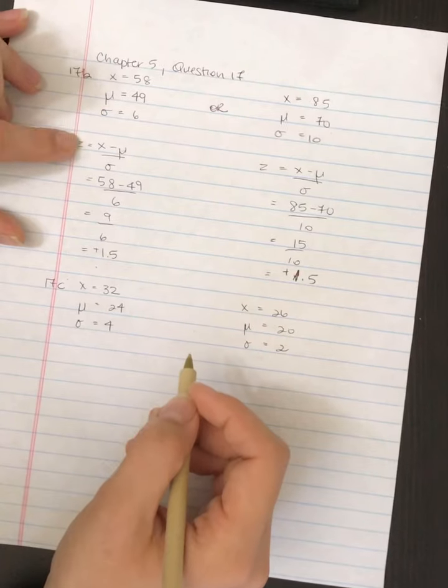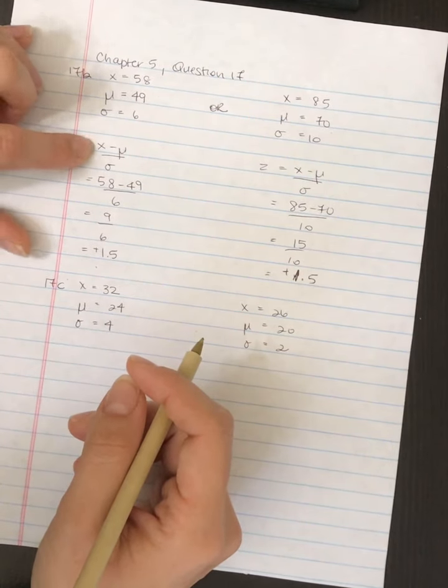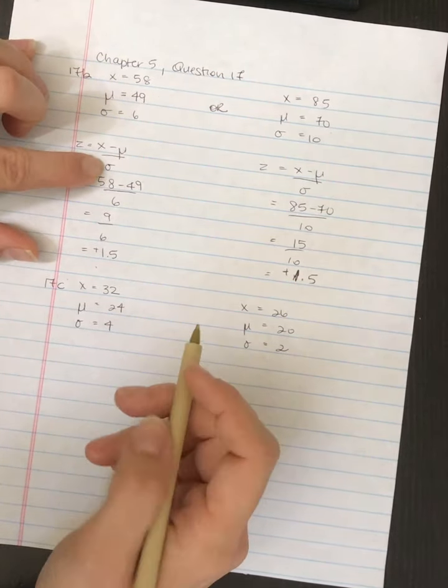So we're going to use this same formula as up here. The z-score is equal to x minus mu divided by the standard deviation.